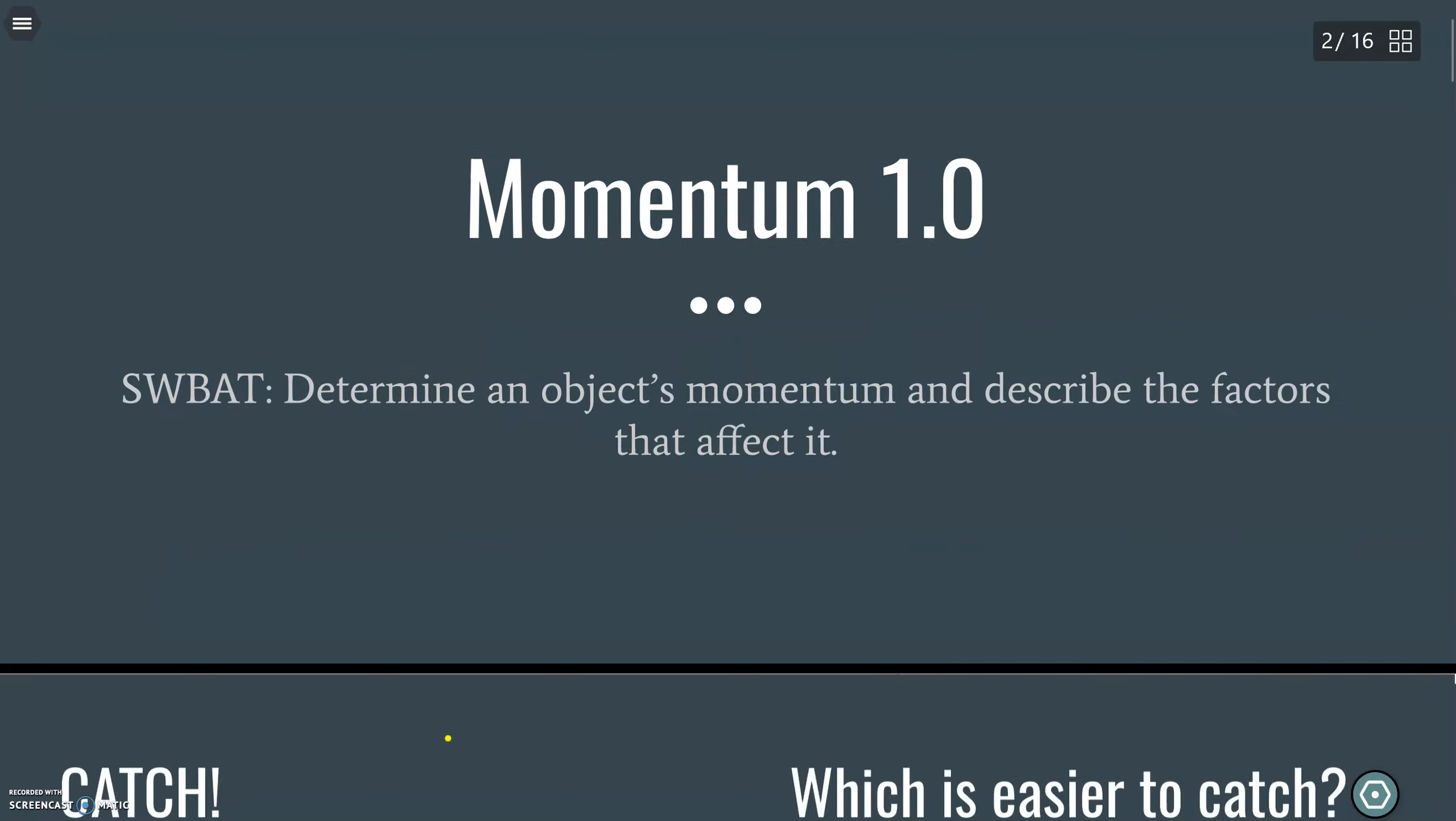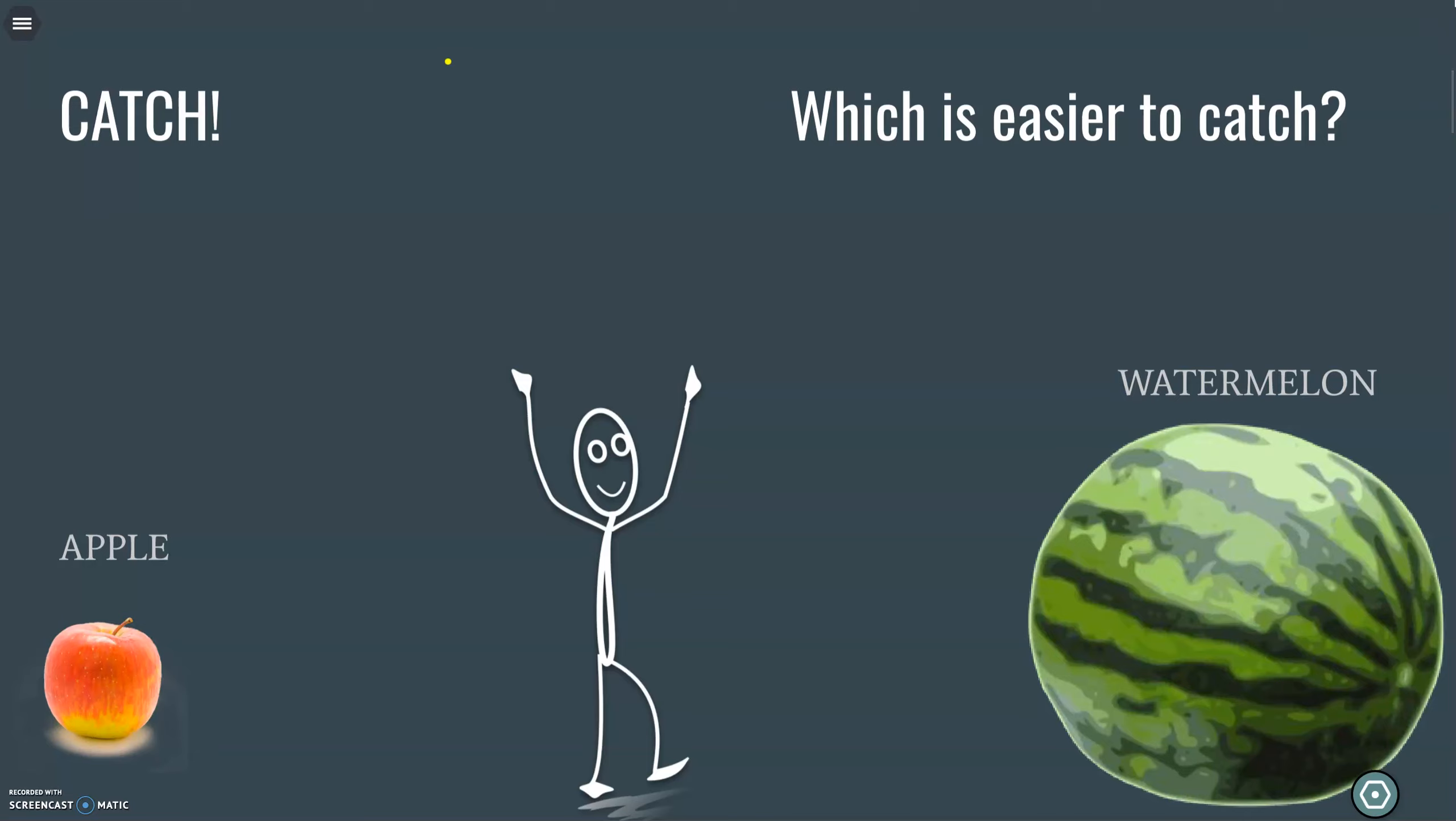So without further ado, let's say somebody wants to play catch. Which is going to be easier to catch? Someone tosses you an apple, someone tosses you a giant watermelon.